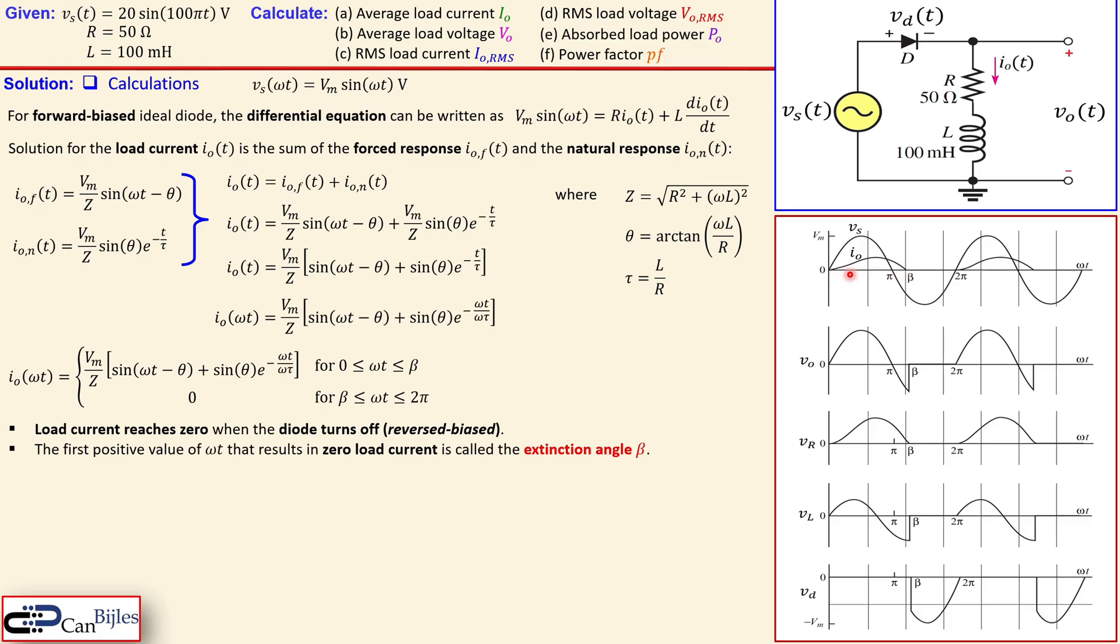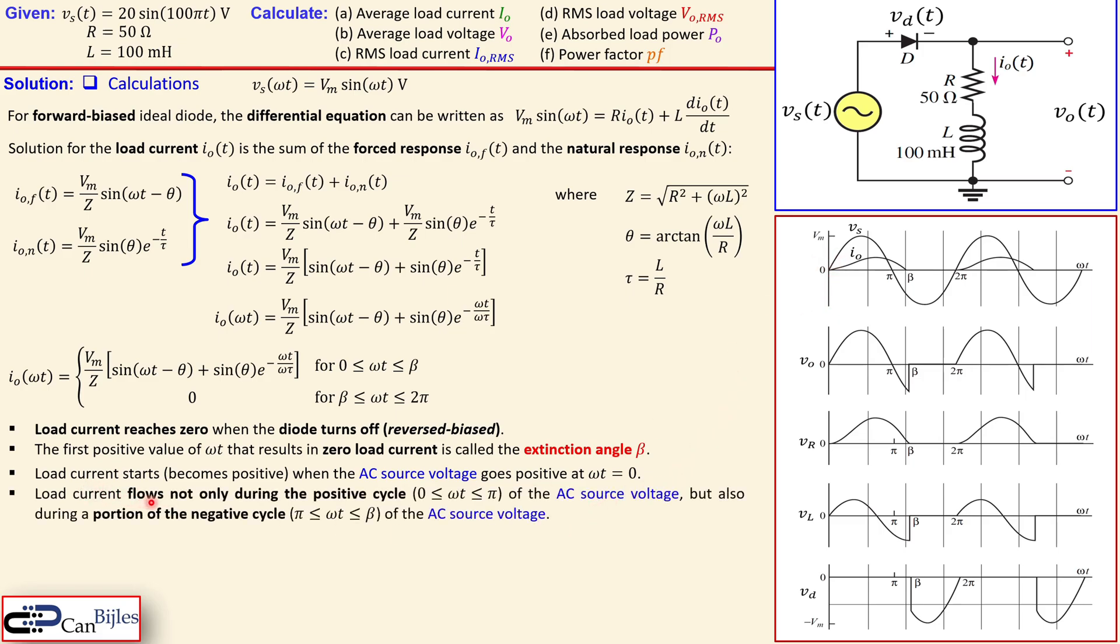The load current starts or becomes positive when the AC voltage goes up. So it goes positive that is actually starting from the origin. But the load current flows not only during the positive cycle which we had in the resistive load but also during a portion of the negative cycle. Because you see here if you look at the V_S which is this now it goes down it will be negative but still the load current is positive. So it is still conducting so from top to bottom. Now that is an interesting thing and that is happening between the π and beta. Again beta needs to be calculated.